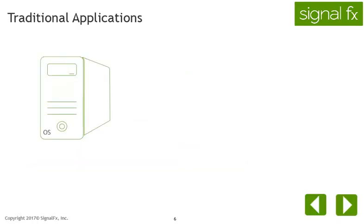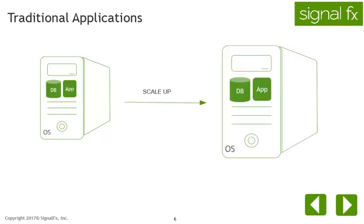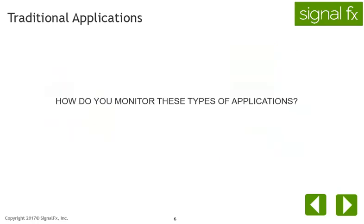Traditional applications were oriented around a single machine. They were monolithic, running an operating system, an application, and a database all on one machine. The application was usually one piece of software with all of its libraries and dependencies bundled up and installed on the same machine. Some had technologies that allowed replicas and failover nodes, but you added capacity by running on bigger machines — in other words, you scaled up.